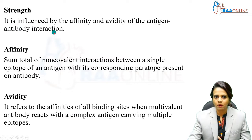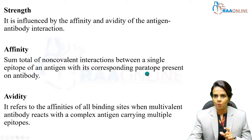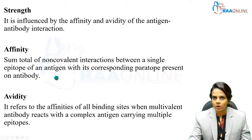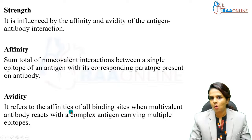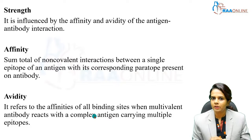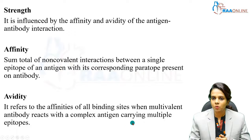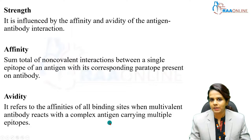The third property is strength, where we need to understand affinity and avidity. Affinity is the interaction that occurs between a single epitope with a single paratope. Avidity is the sum of affinities of all binding sites when a multivalent antibody reacts with a complex antigen. A complex antigen contains multiple epitopes, and a multivalent antibody — for example, pentavalent IgM — contains multiple valencies. The total strength of such an antigen-antibody reaction is called avidity.